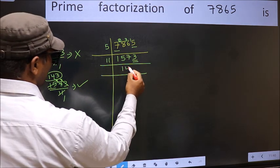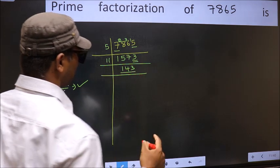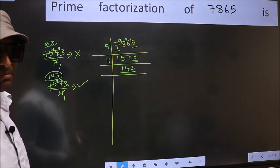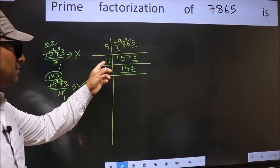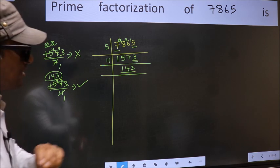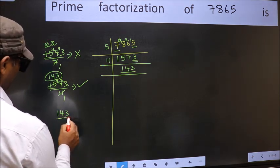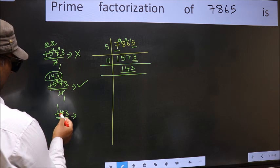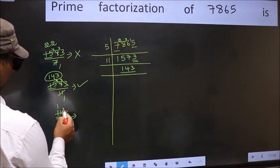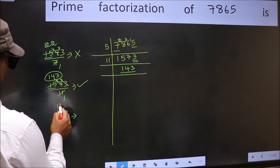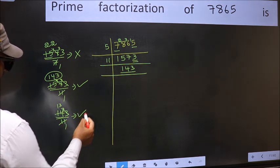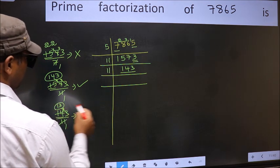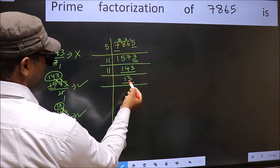For 143, we don't need to check divisibility by 2, 3, 5, or 7 as we had already checked before. So we start checking from 11 onwards. A number close to 14 in the eleven table is 11 once, 11. 14 minus 11 is three. Carry forward 33 — we get 33 in the eleven table as 11 threes. No number is left out, so 143 is divisible by 11. Write 11 as a factor, and the quotient is 13.